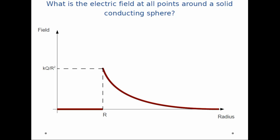Remember, kq over capital R squared is a number, it is a value. And then it drops off as 1 over r squared as you go outward from the sphere.